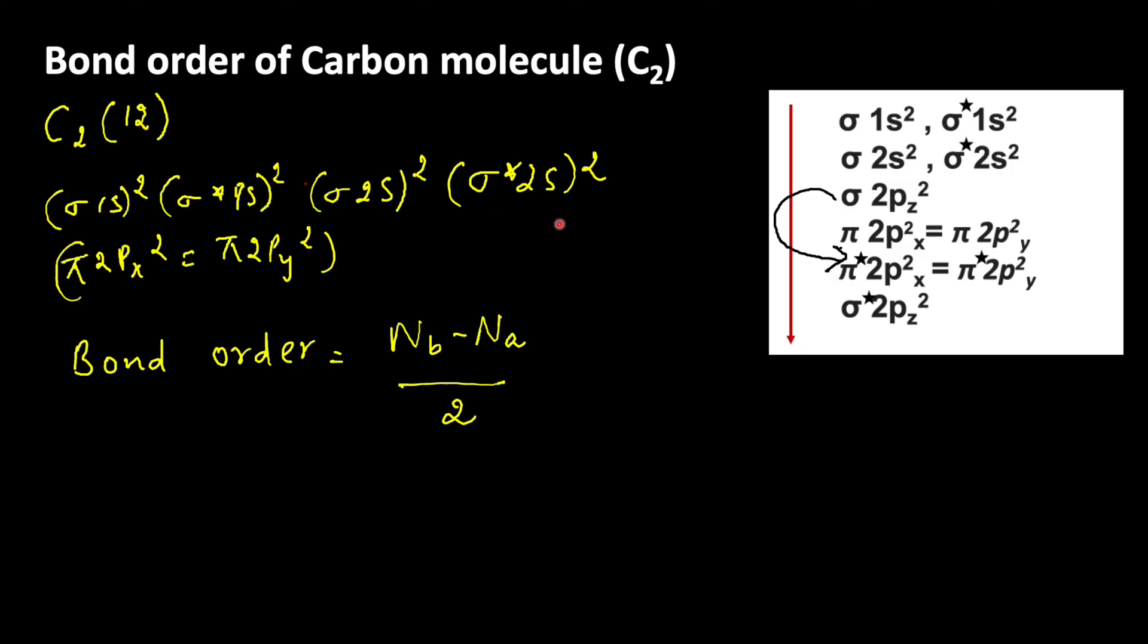8 minus 4 by 2 equals 4 by 2 which is equal to 2. Bond order of carbon molecule is 2. It means there is the presence of double bond in carbon molecule and carbon molecule is very stable and it also exists.